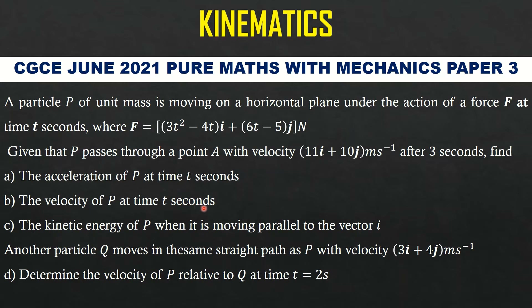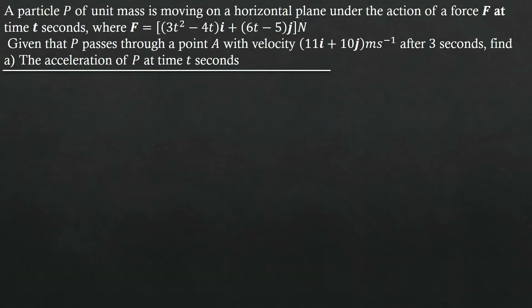Find: (A) the acceleration of P at time T seconds, (B) the velocity of P at time T seconds, (C) the kinetic energy of P when it is moving parallel to the vector i. Another particle Q moves in the same straight path at 4j meters per second. Finally, (D) determine the velocity of P relative to Q at T equal to 2 seconds. We are going to begin solving part A now — it's asking us to find the acceleration of the particle P at time T seconds.